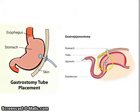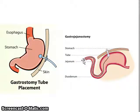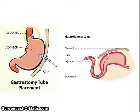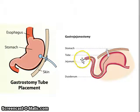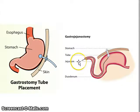The gastrojejunostomy is the exact same procedure, except the catheter is threaded further down into the jejunum. This is done because with the tube placed only in the stomach, the patient can suffer from reflux, which could cause aspiration — the contents could reflux and the patient could aspirate into the lungs. With the catheter placed further down in the system, into the jejunum, the chances of reflux are greatly diminished. So it's the same procedure, just a different catheter length.